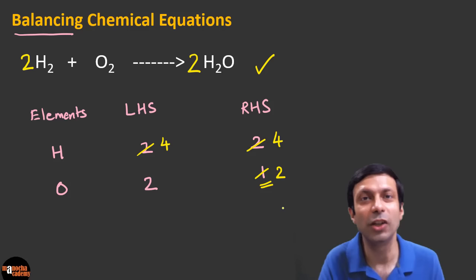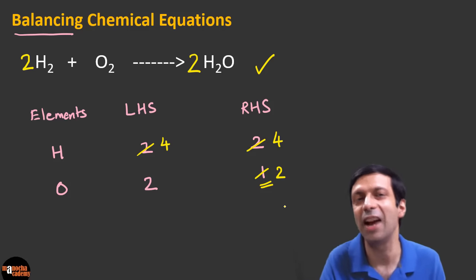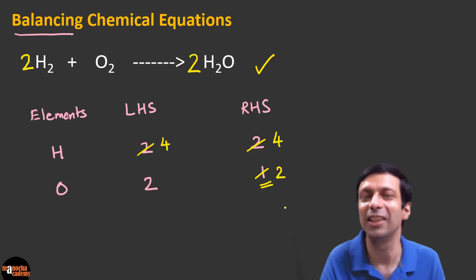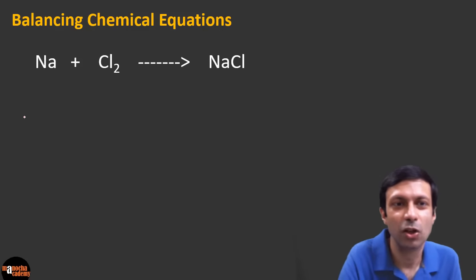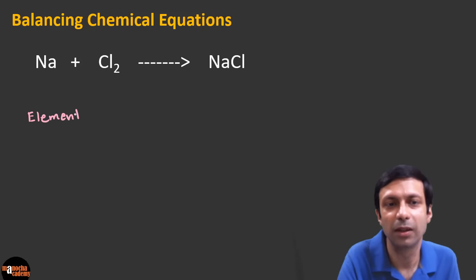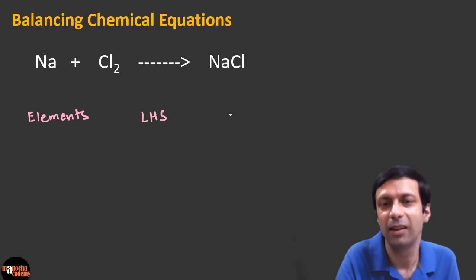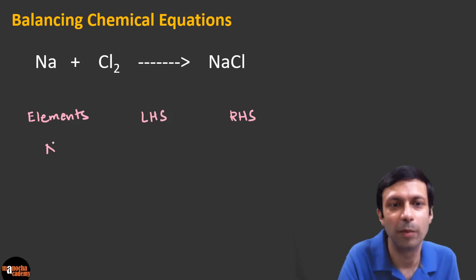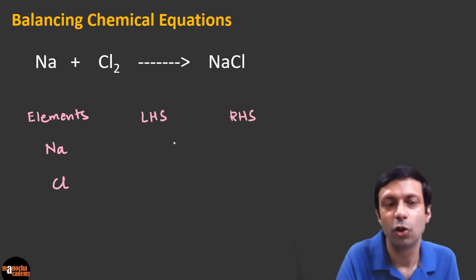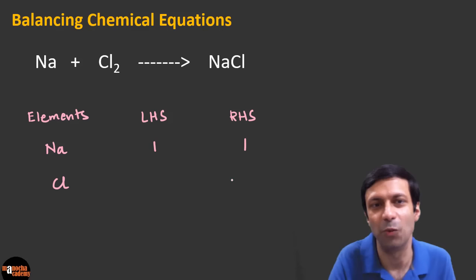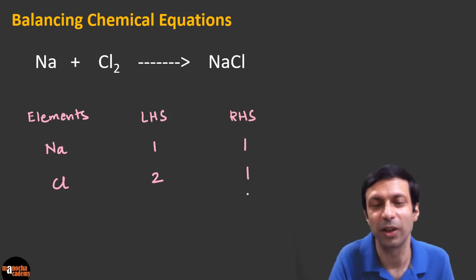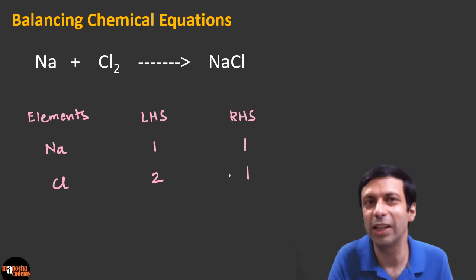Remember our goal: balance the number of atoms of each element on the left and right hand side — the reactants and the products. Are you ready to try the next example: sodium plus chlorine gives sodium chloride? Let's check if this equation is balanced. Make two columns — elements: sodium and chlorine. Sodium: one on the left and one on the right. Chlorine: two on the left and one on the right. This equation is not balanced because the chlorine atoms are not equal. If it were balanced, you wouldn't need to do anything.